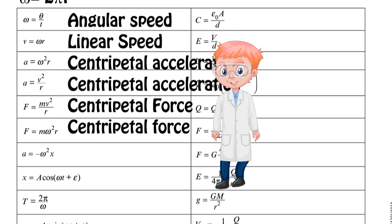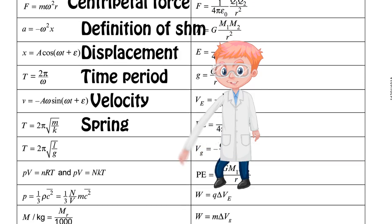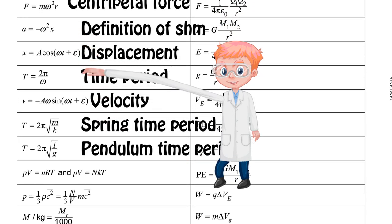The next six are for SHM, simple harmonic motion. Starting with the definition for simple harmonic motion and moving on. Now key thing to remember here is epsilon can only be zero, pi by two, or minus pi by two depending on the initial conditions. To work out which one it is you need to use your knowledge of sine graphs and any initial conditions that you are given.